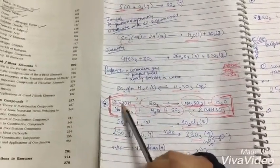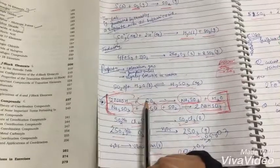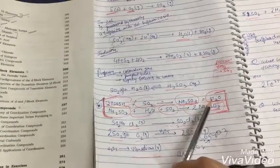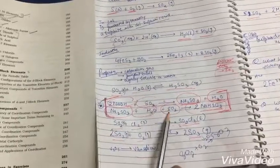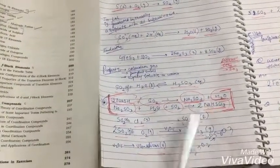These two equations are very important. 2 NaOH plus SO2 will give us Na2SO3 plus H2O. You'll find these in NCERT. Na2SO3 plus H2O plus SO2 gives us NaHSO3.